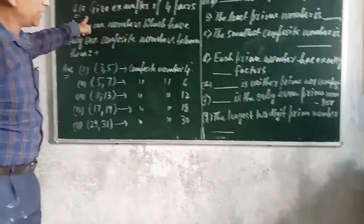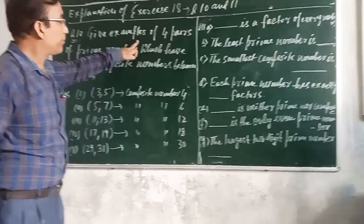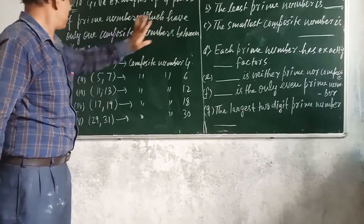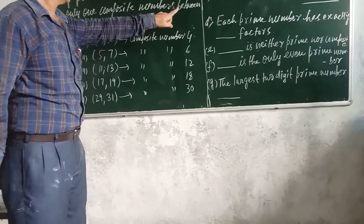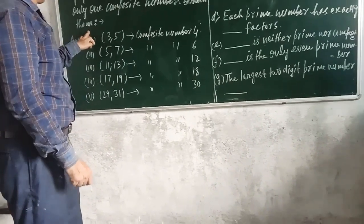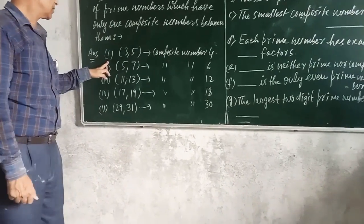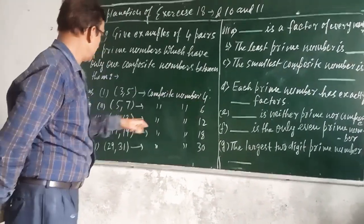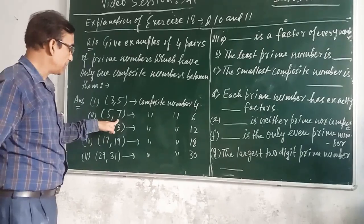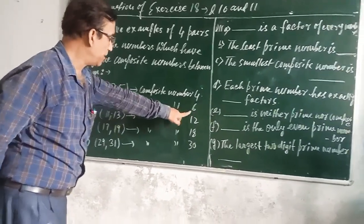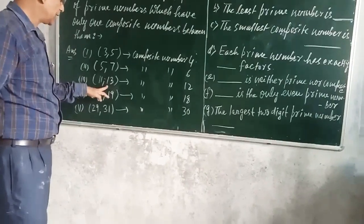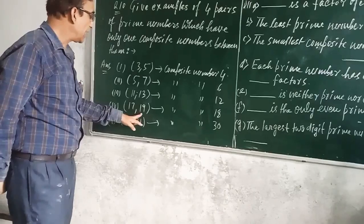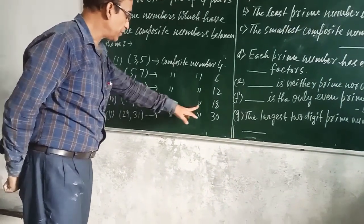Question number 10 is: give examples of 4 pairs of prime numbers which have only one composite number between them. Our answer is 3, 5 because there is composite number 4 between them. The second one is 5, 7 because there is composite number 6 between them. Then 11, 13 because there is only one composite number 12 between them. Then 17, 19 because there is only composite number 18 between them.